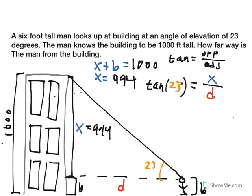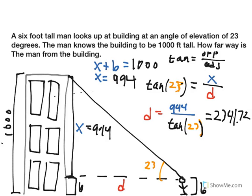So the distance is going to equal 994 over the tangent of 23 degrees. And that is going to equal 2,341.72 feet. All right.